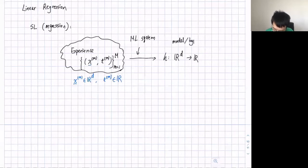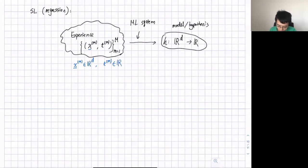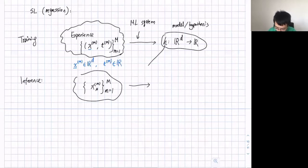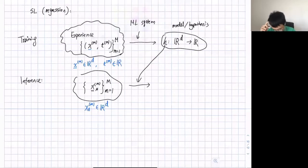This is my training phase. Then in the inference or prediction phase, I have some new data X_m star — that's my test data. I don't need the target brackets because I don't know the target during inference. I apply the function to each sample of the test data.